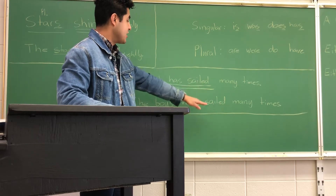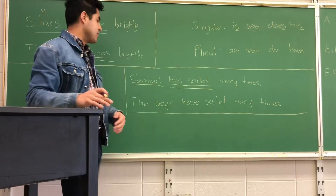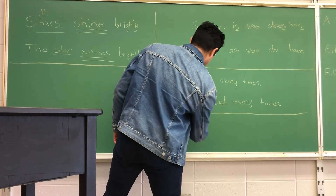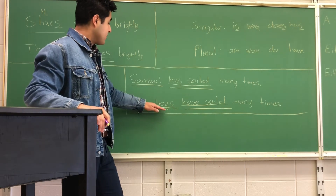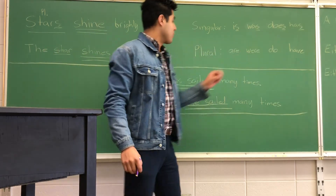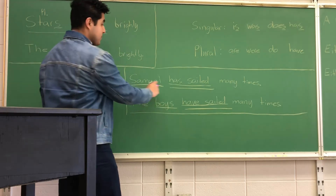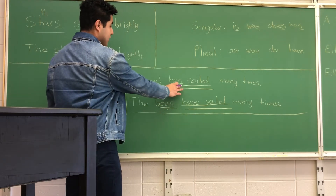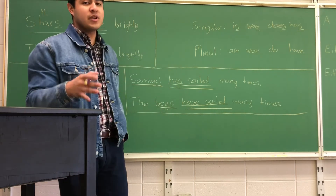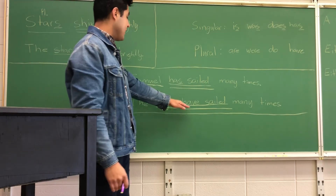Now, notice that 'sailed' is not going to change. Even in this next sentence — 'The boys have sailed many times' — boys is our subject and it's plural, so we have the verb phrase 'have sailed.' The subject has to agree in number with the verb, so here we have a plural verb from our plural list. Notice that when it's singular, we have 'has' with an S, but for the plural subject it does not have the S. There are going to be exceptions, but for the most part that is true.